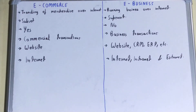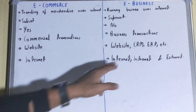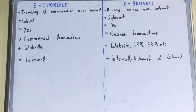Regarding the network used: e-commerce only uses the internet — anyone globally who likes your product can place and pay for an order. But e-business is carried out over all kinds of networks, including the internet, intranet, and extranet. That covers the difference between e-commerce and e-business.